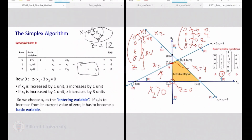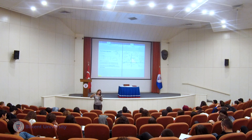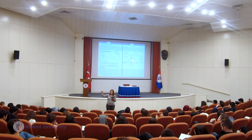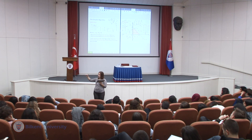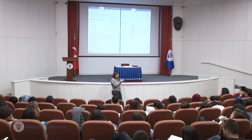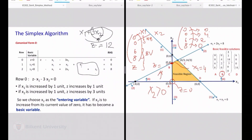If you plug in this new vector 0, 4 instead of 0, 0, you will get exactly z equals 12. The net change is the per unit change times the number of units. You chose x2 because the per unit change was 3. What is the highest point? That's 4. So 3 times 4 — that's the net change in your objective function. This is your new vector, and you will ask the same question: is this the best, or can I find something better in the neighborhood?